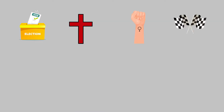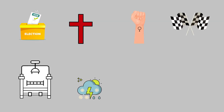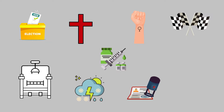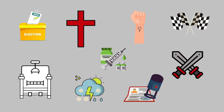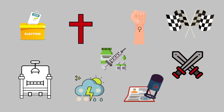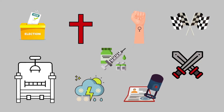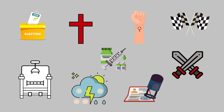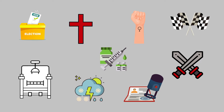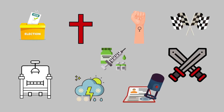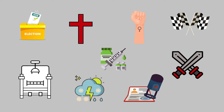Confirmation bias can impact people's views on social issues such as politics, religion, women's rights, race, capital punishment, climate change, vaccinations, immigration, war, and other important topics.